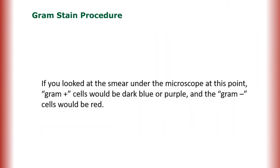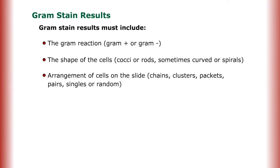If you looked at the smear under the microscope at this point, gram-positive cells would be dark blue or purple and the gram-negative cells would be red. Now we'll look at gram stain results. Gram stain results must include the gram reaction, gram-positive or gram-negative, the shape of the cells, cocci or rods, sometimes curved or spirals, and the arrangement of cells on the slide.